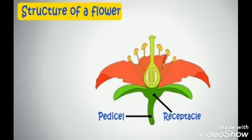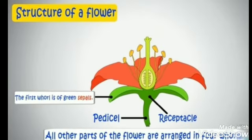The first whorl is the green sepals. Sepals make the outermost layer of the flower. They cover and protect the other parts of the flower when it is a bud.